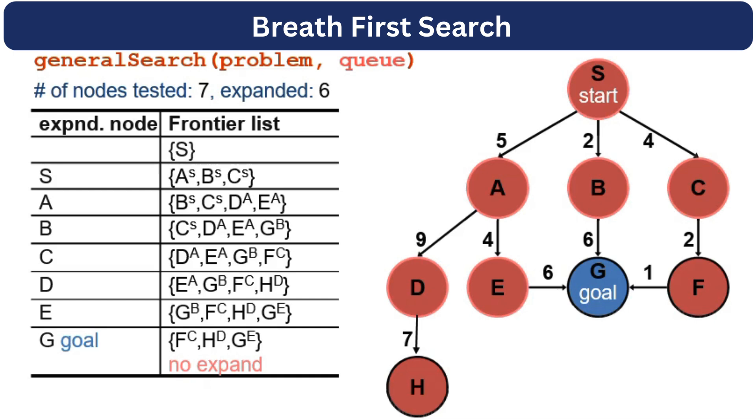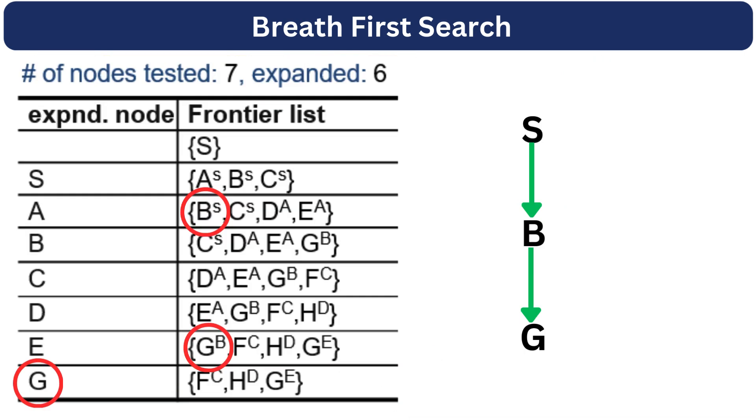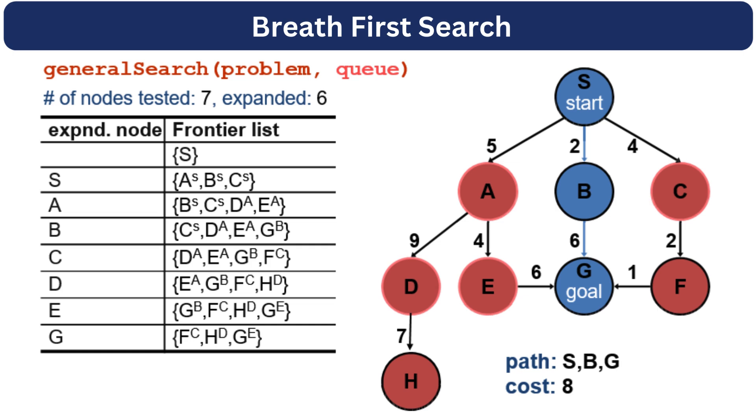Now we have to calculate the path from S to G. To calculate the path, we need to backtrack. Which node led us to G? It was B node. And which node led us to B? It was S node. So the path would be S, B, and G. And to calculate the path cost, we will add the path cost of S to B and B to G: 6 plus 2 equals 8.